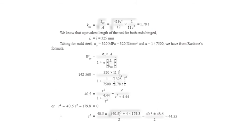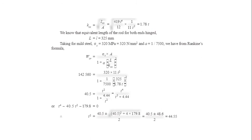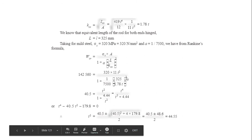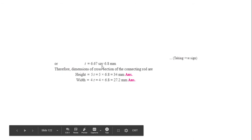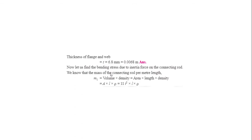Using the quadratic formula ax² + bx + c = 0, where x = [-b ± √(b² - 4ac)] / 2a, we solve for t. The result gives t² = 44.55, so t = 6.67 mm, taken approximately as t = 6.8 mm. The final cross-sectional dimensions of the connecting rod are: height = 5t, width = 4t. Substituting t = 6.8 mm gives the dimensions. Thickness of flange and web is also equal to t.